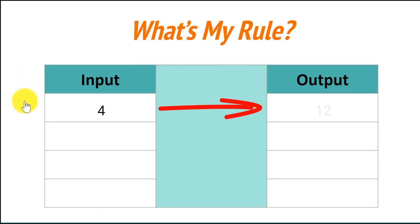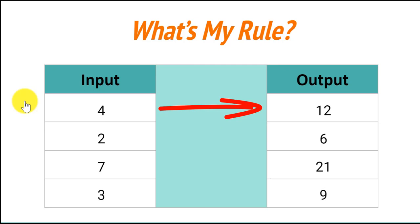So let's try it. When our input is 4, our output is 12. Think quietly to yourself — what do you think my rule is? When the input is 2, the output is 6. Is it still the same rule? Does it still work? When the input is 7, the output is 21. Now you're probably predicting the output for each input. When the input is 3, the output is 9.